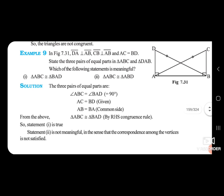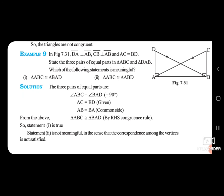Is mein jo 'try this' wala hai, wo aapko try karna hai. Usme aap kaunsa rule apply karoge — R, H, S: Right angle, Hypotenuse, and Side. Aapko samajh mein aa gayi four criteria: SSS (Side-Side-Side), SAS (Side-Angle-Side), ASA (Angle-Side-Angle), and RHS (Right angle-Hypotenuse-Side). Uska meaning aapko pata hai — wo aapko maine bola tha find out karne ke liye. Acche se read karna, samajh mein aa jaega.